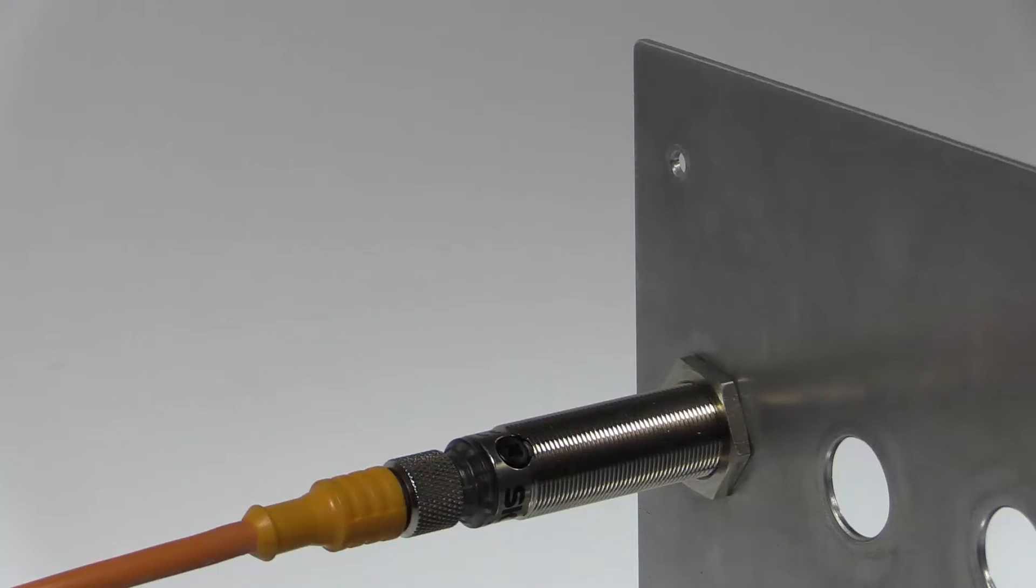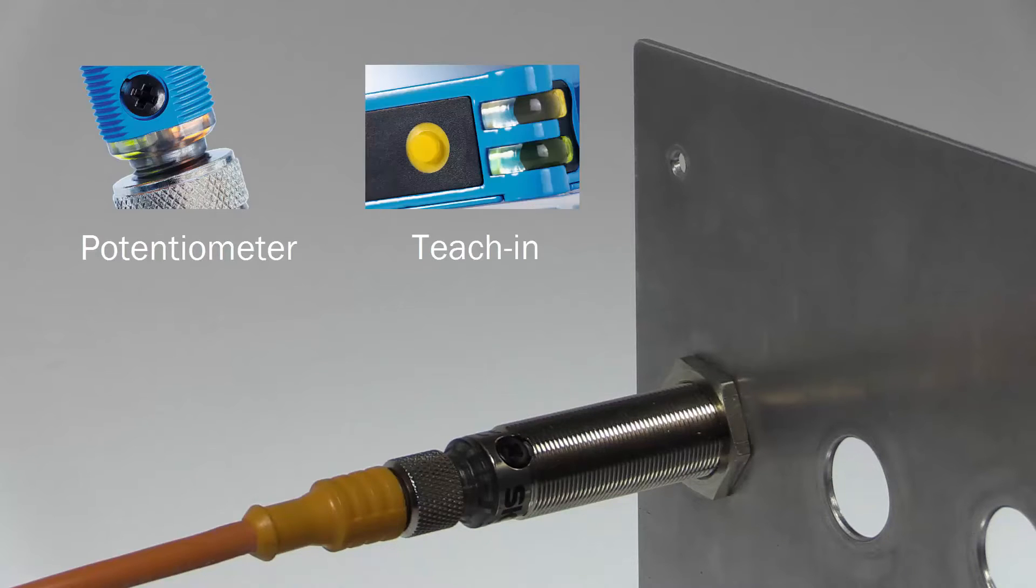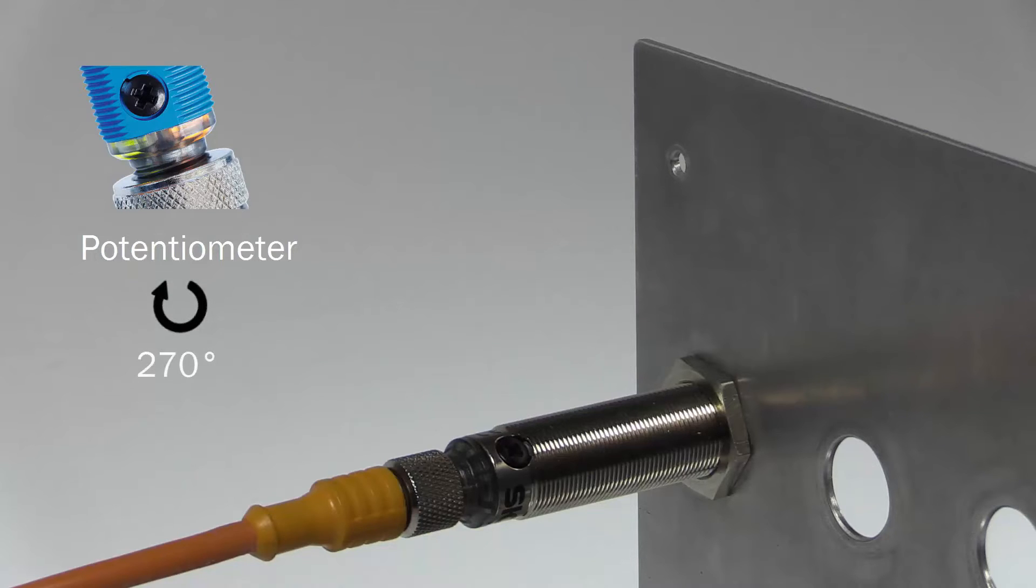Generally speaking, the sensing range of a proximity sensor can be adjusted with a potentiometer or a teach-in button. On the GR18, the sensing range is adjusted by a 270-degree potentiometer.